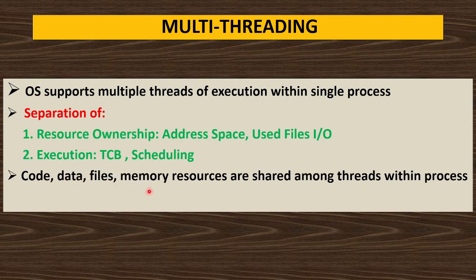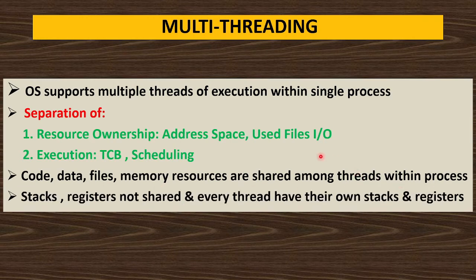Code, data, files, and memory resources are shared among threads within the process. But stack, register, and counter are not shared — every thread will have their own stack, register, and counter.